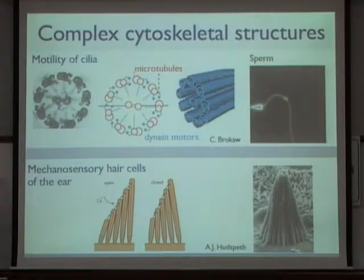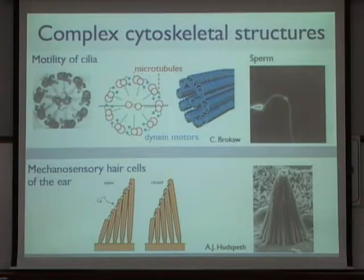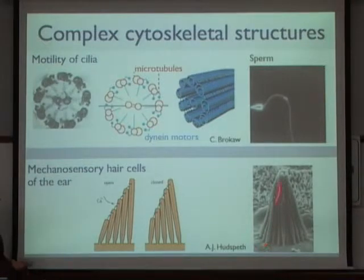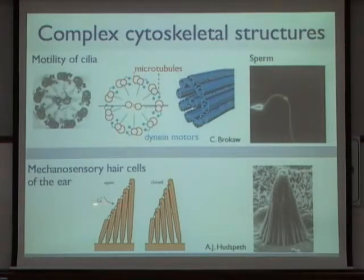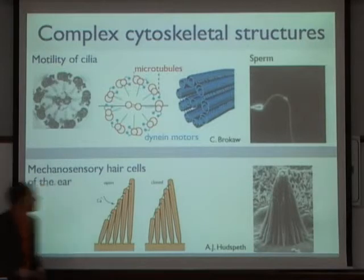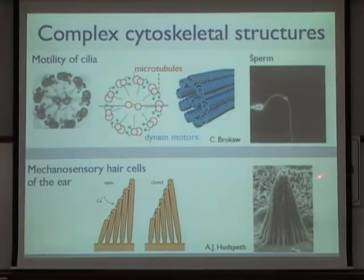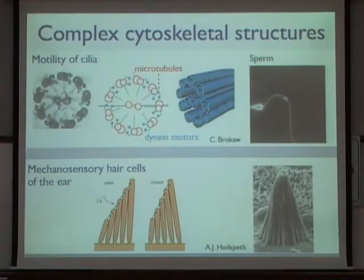A second example of highly organized cytoskeletal structures are so-called hair bundles, shown here in electron microscope view. These are the mechanosensory organelles of sensory cells in our ears — a mechanoelectrical transducer. These finger-like extensions are filled with actin filaments (stereocilia) and contain mechanosensitive ion channels that open and close when the bundle is slightly deflected. The resulting influx of ions gives rise to a change in membrane potential, making this a sensitive mechanosensor. Myosin motors are also involved and help amplify mechanical stimuli.